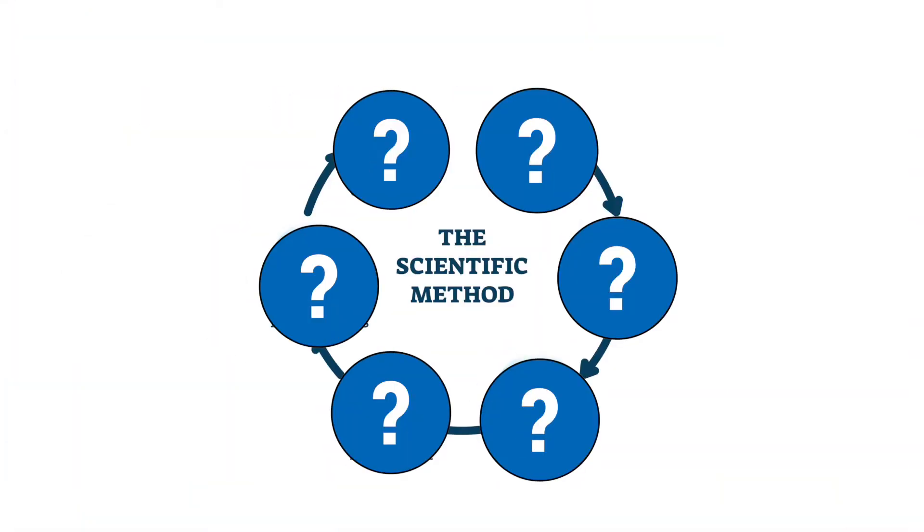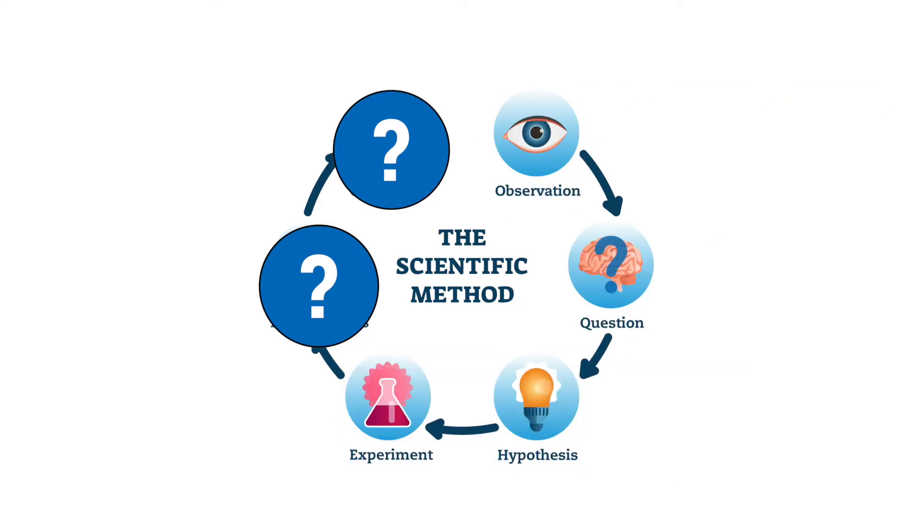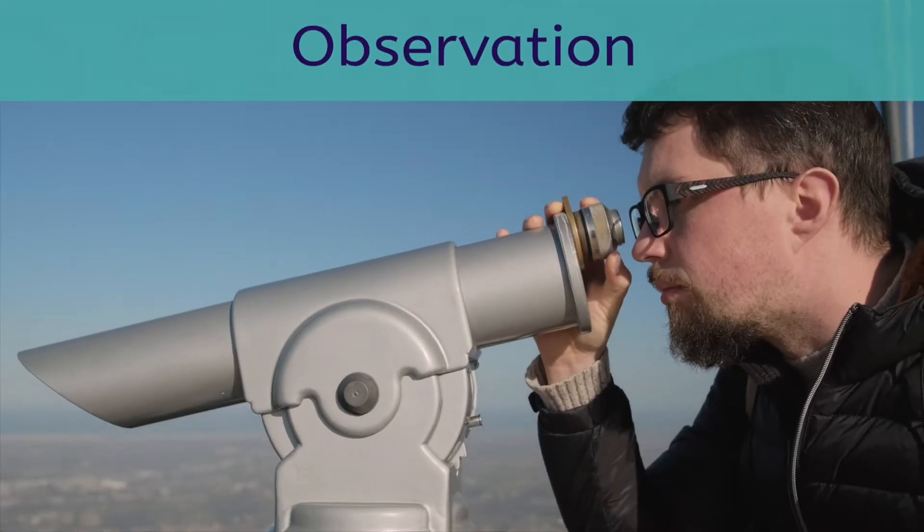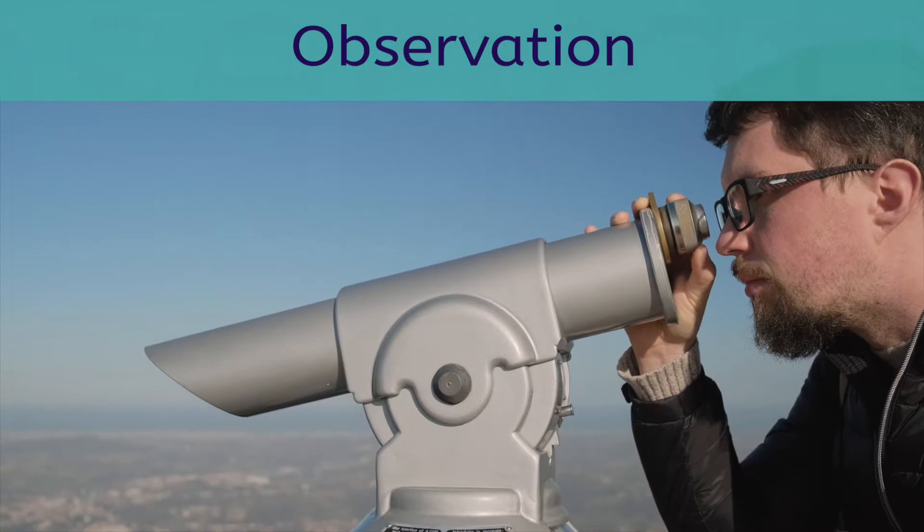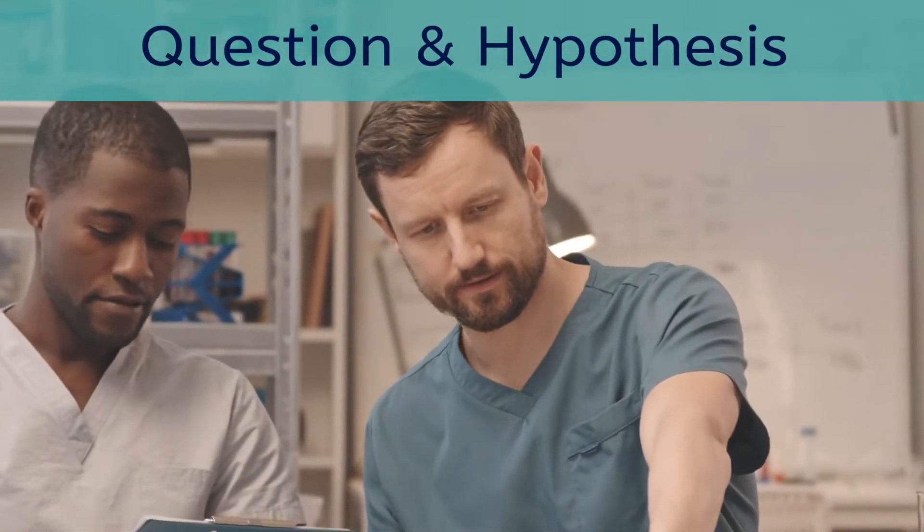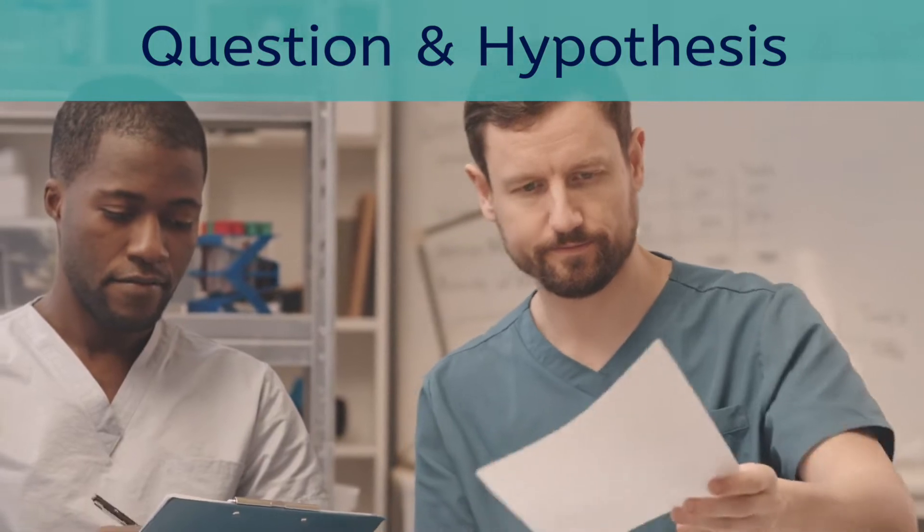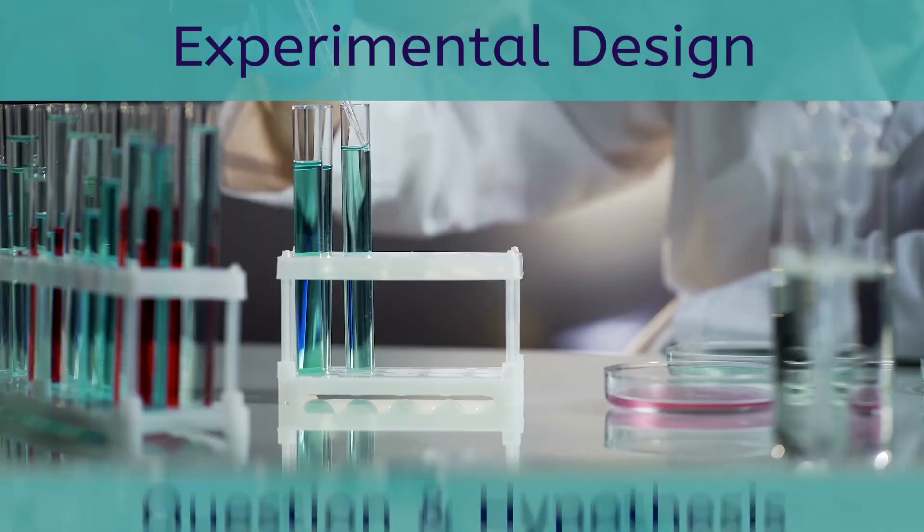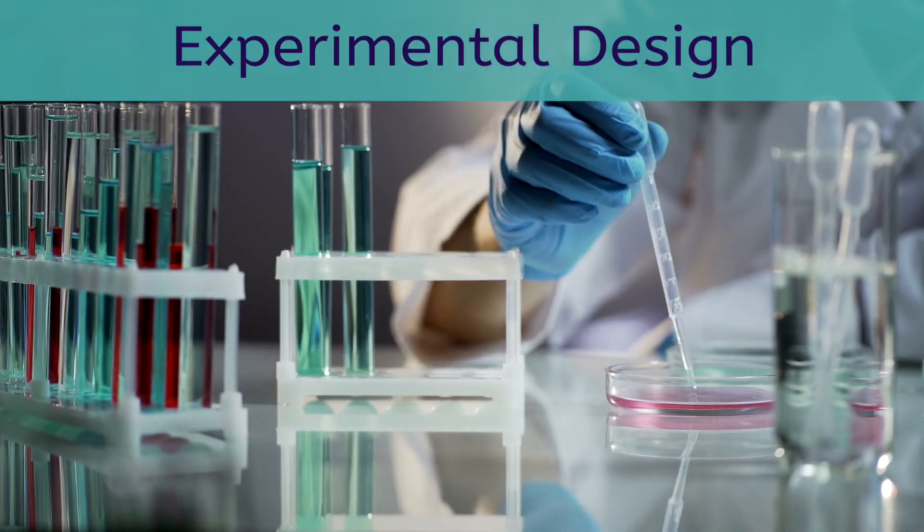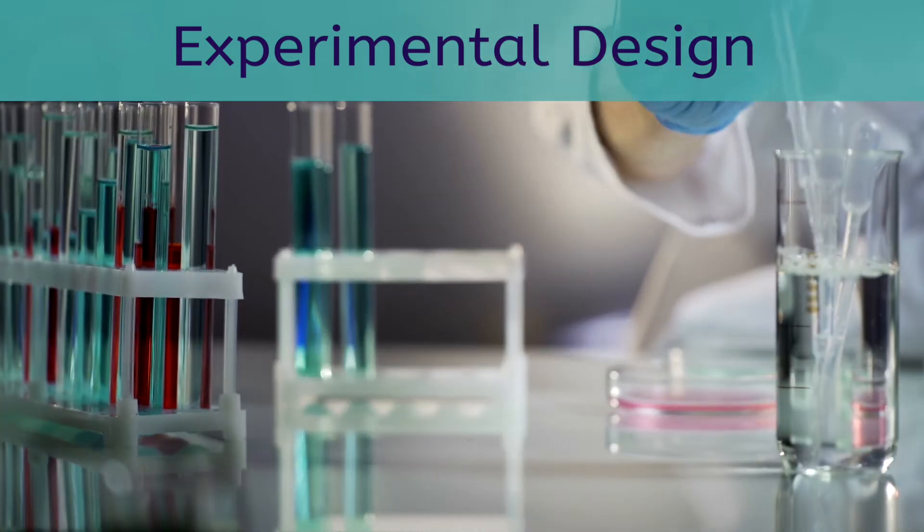We've already covered the first four steps in the scientific method: observation, which is using our senses to gather information, coming up with a scientific question and a hypothesis to predict the answer to our question, and carefully crafting our experimental design to ensure reliable results.